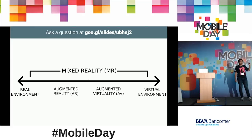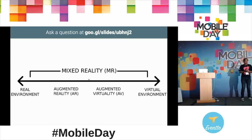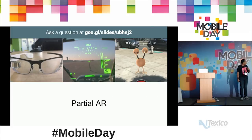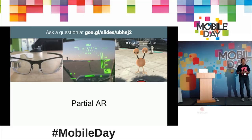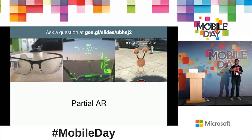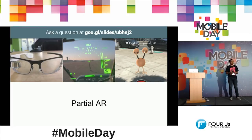We kind of define mixed reality as a range, not as a binary — like, this is virtual reality, this is augmented. That's because we have different portions and different technologies supporting different capabilities. We have already seen partial augmented reality. Google came up with the Google Glass concept, which was kind of partial augmented reality — it used to project something on top of reality, but it was not anchored over anything.